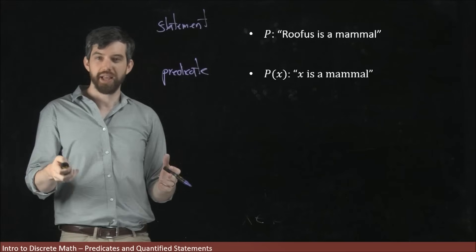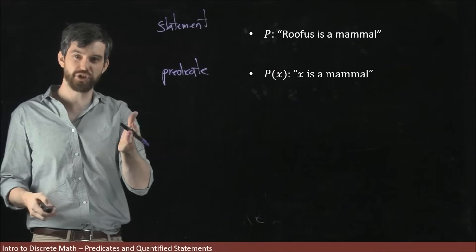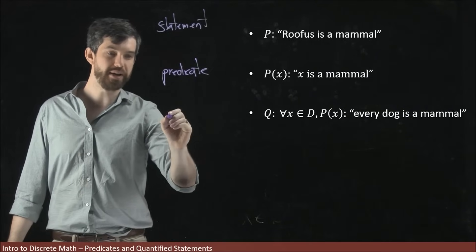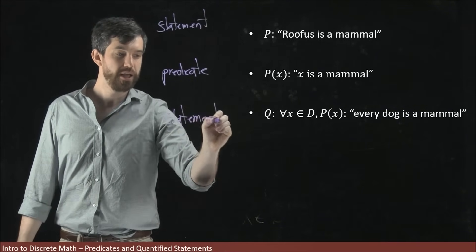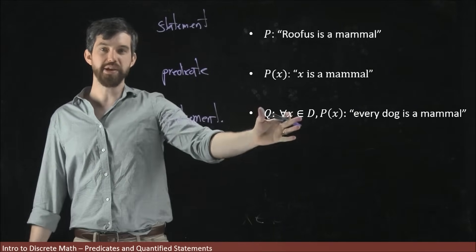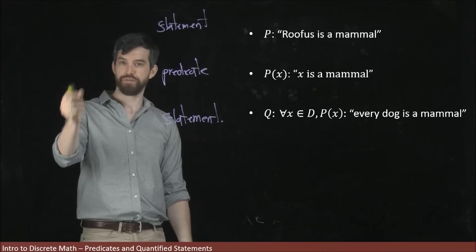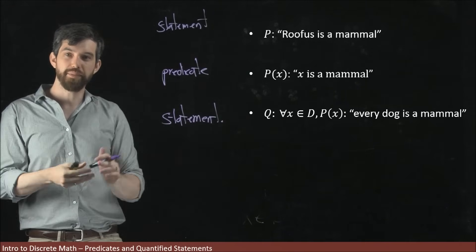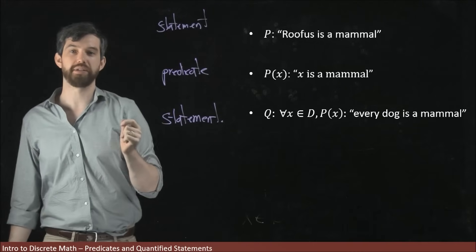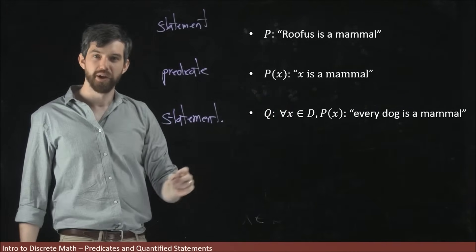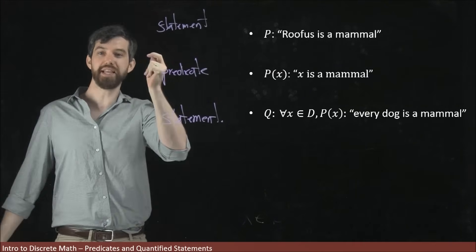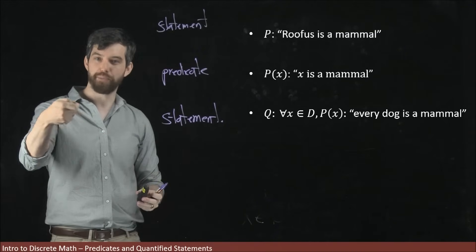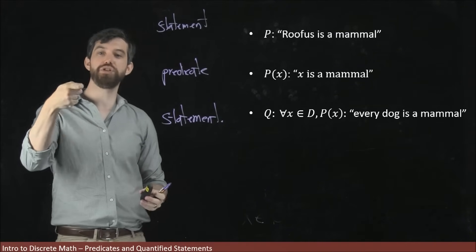What does a quantifier do? If you put either the universal or the existential quantifier in front of a predicate, it turns it back into a statement, because the resulting claim is either true or false. For example, 'every dog is a mammal' is of the form 'for all X in some domain, P of X,' and it is a true logical statement. Likewise, 'there exists an oldest person' is a true statement. So when you quantify a predicate, that turns it into a logical statement.